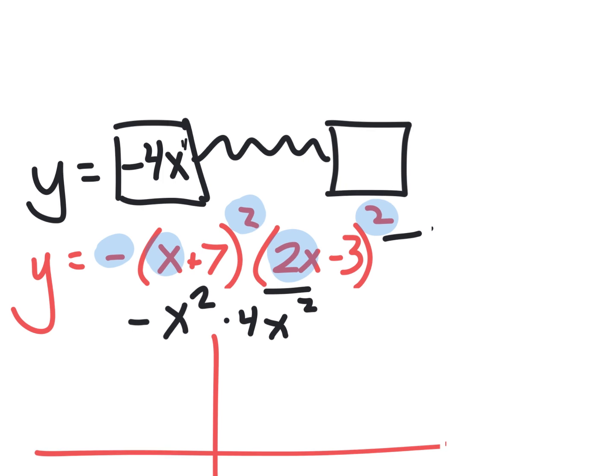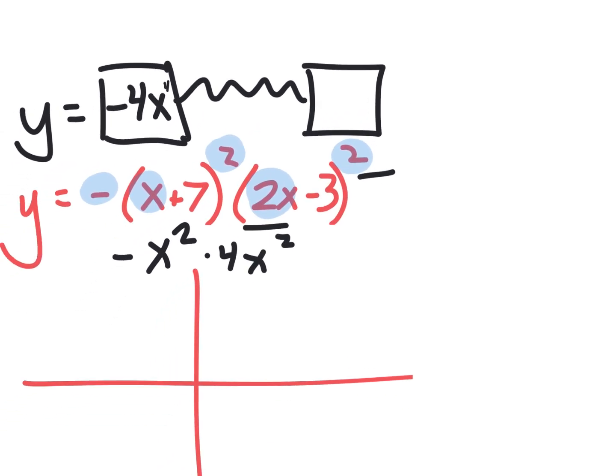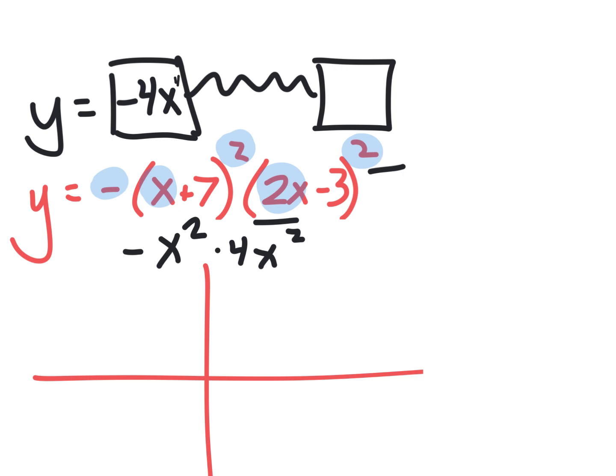Now that tells me it's a degree 4, which means that both ends, since that's an even number up there, both ends are going in the same direction. So this negative tells me it's down on the right, and if both ends have to be in the same direction, it must be also down on the left. It goes through negative 7, and it's bouncing there because of this 2. I'm going to put a B for bounce.